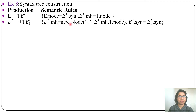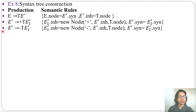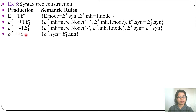E1' inherited from new node plus E' inherited and T node — I already discussed this in the previous lecture. This new node is for creating a node, and E' synthesized equals E1' synthesized, so this E' node is synthesized from E1' node. One attribute can be synthesized from its children. Next production: E' derives minus T E1'. Here E1' inherited from new node minus E' inherited and T node, then E' synthesized from E1' synthesized.